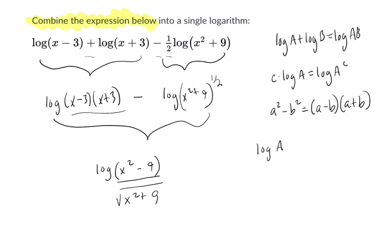Because the log of a minus the log of b equals the log of a over b. So this is my a, this is my b, and we're subtracting them. So we get a over b.